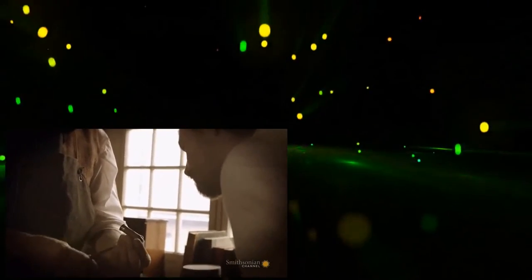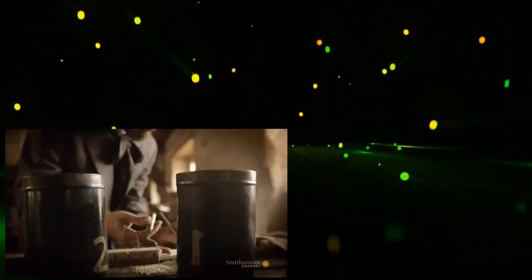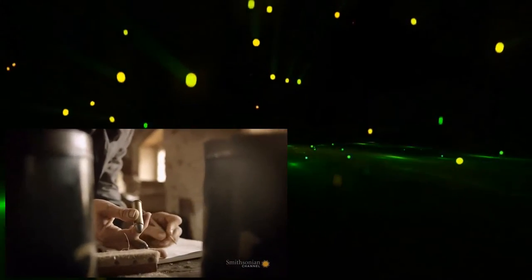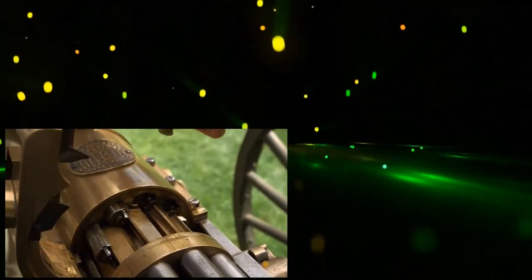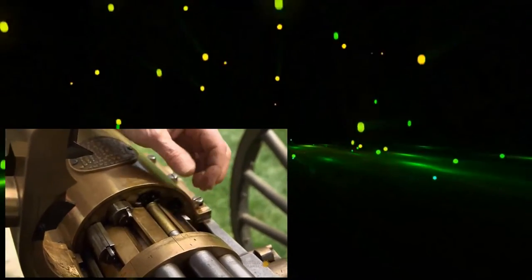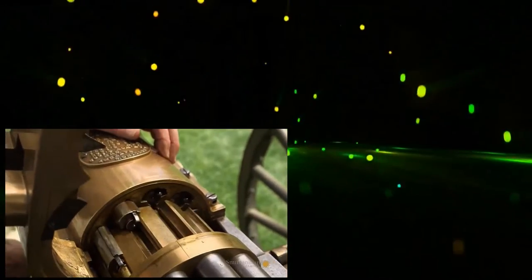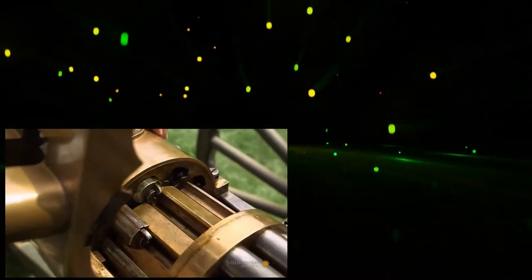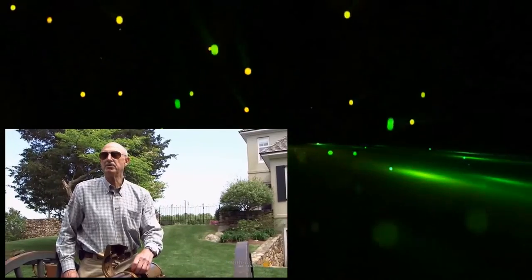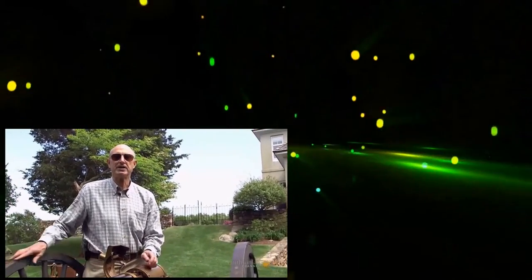These problems see Gatling turn instead to another innovation of the day. Metal cartridges. They're uniform in size and shape. Once in the chamber, it was totally enclosed by the barrel, so when it exploded, the bullet had nowhere to go except straight down the barrel.